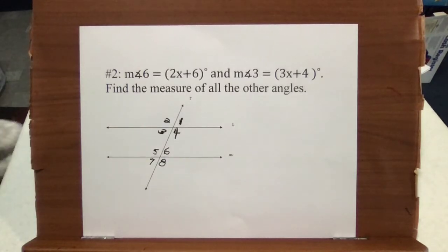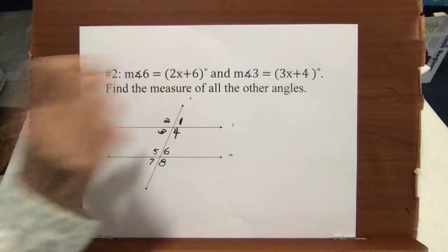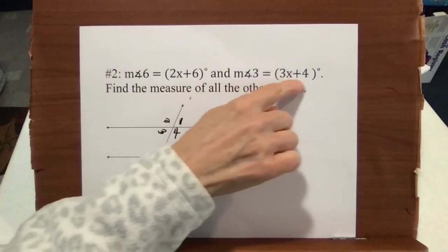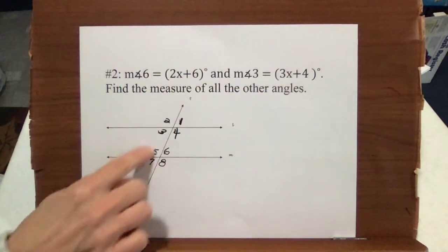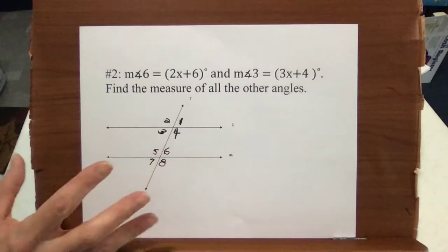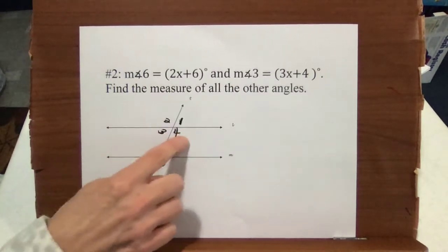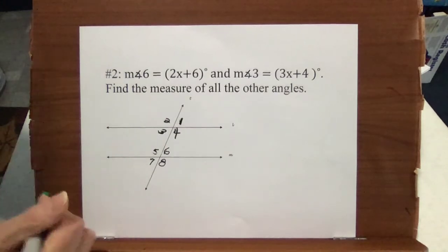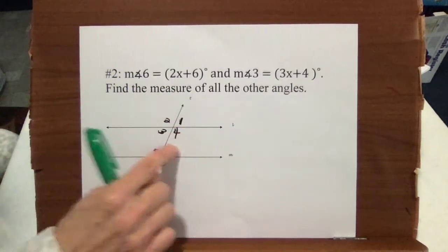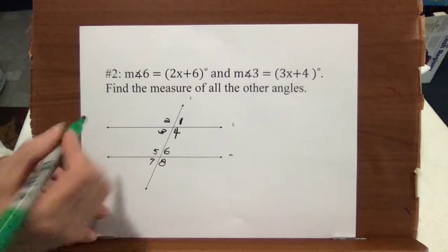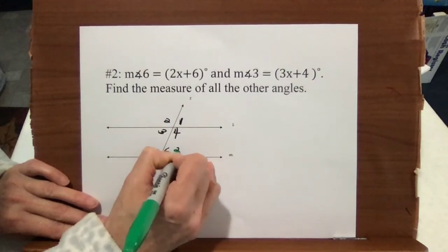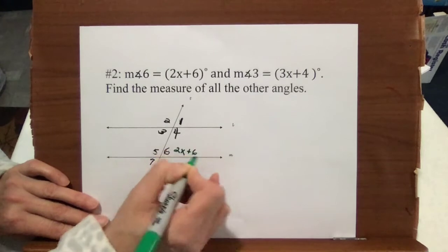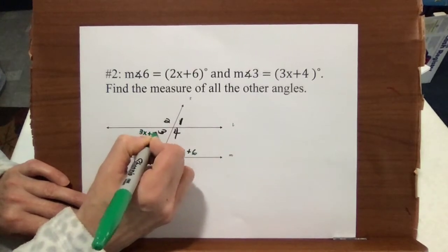In this problem, we want to find the measures of all the angles using the fact that the measure of angle 6 is 2x plus 6, and the measure of angle 3 is 3x plus 4. When you look at these angle names, don't assume they're always going to be named the way you expect. This is 1, 2, 3, 4, and this is 5, 6, 7, 8. So angle 6 is 2x plus 6 — I'm going to put that right here — and angle 3 is 3x plus 4, and I'm going to put that here.